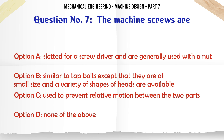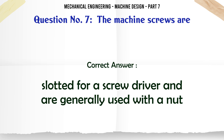The machine screws are: a) slotted for a screwdriver and are generally used with a nut, b) similar to tap bolts except that they are of small size and a variety of shapes of heads are available, c) used to prevent relative motion between the two parts, d) none of the above. The correct answer is: slotted for a screwdriver and are generally used with a nut.